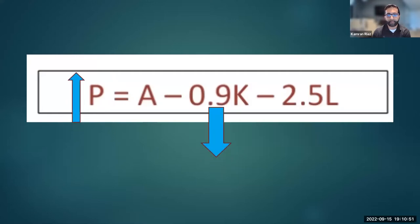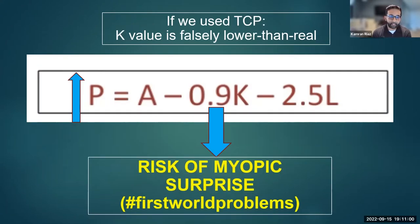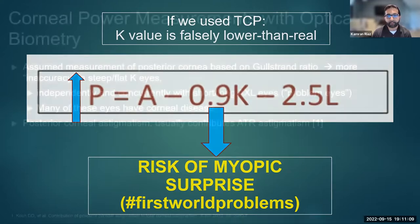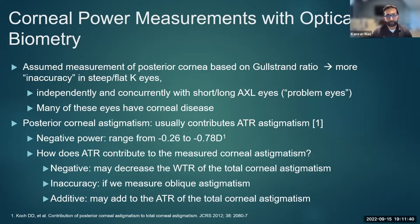Why does the posterior cornea matter? If we use the TCP, the K value is falsely lower than real, which increases the IOL power calculated and causes a myopic surprise — some would call that a first-world problem, which is fine in virgin eyes. The assumed measurement of the posterior cornea is based on things like the Gullstrand ratio and model eyes. But we're inaccurate especially in steep and flat K eyes, independently and concurrently with long and short axial length eyes. Posterior corneal astigmatism affects total corneal astigmatism and total corneal power — it can neutralize, skew, or be additive to the with-the-rule astigmatism.